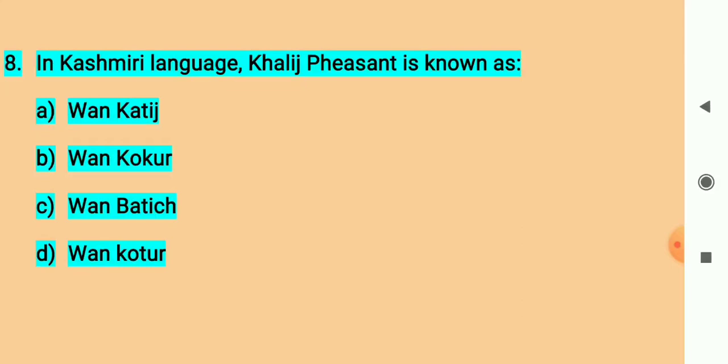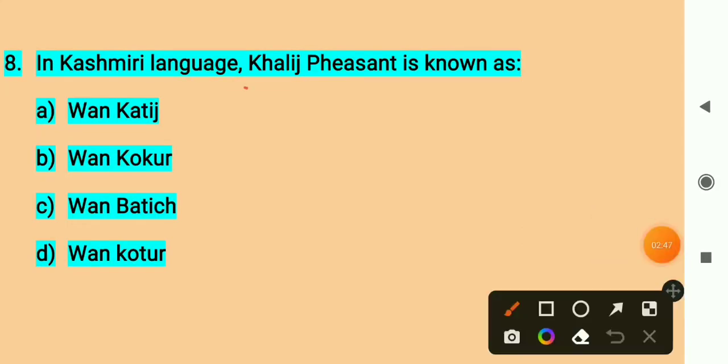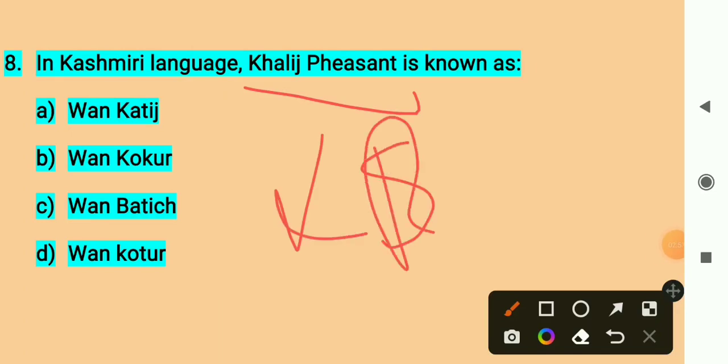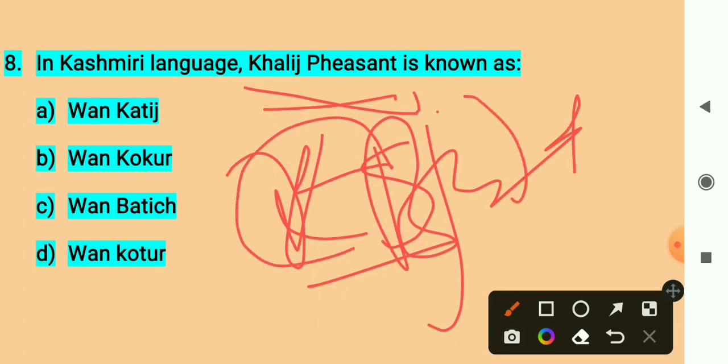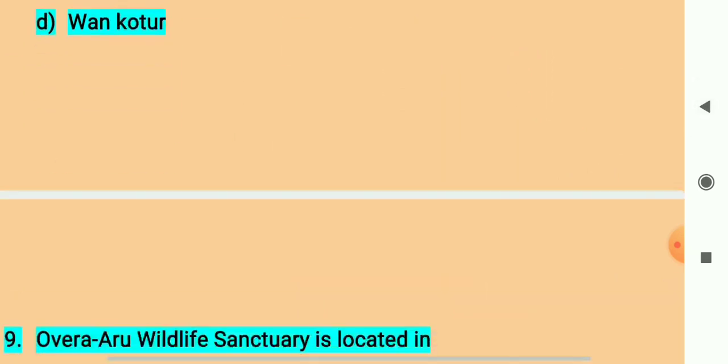Question number eight. In Kashmiri language, khleech peasant is known as? This khleech peasant is a bird, the UT bird of Jammu and Kashmir. What do we call it in Kashmiri language? One cocker. Option B is the right answer.